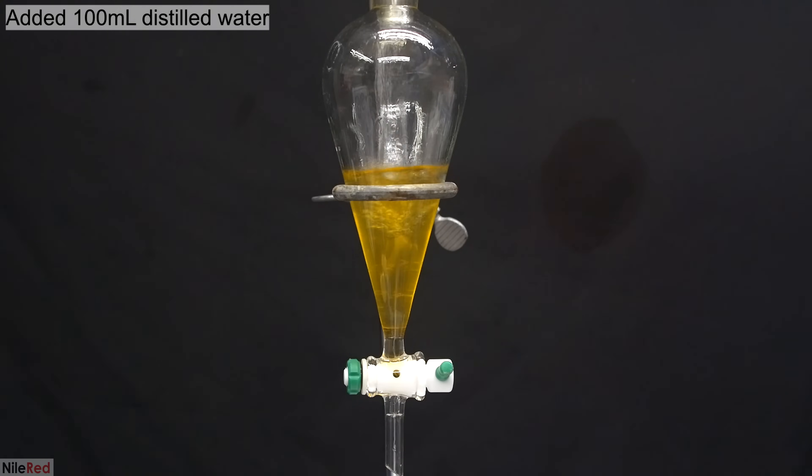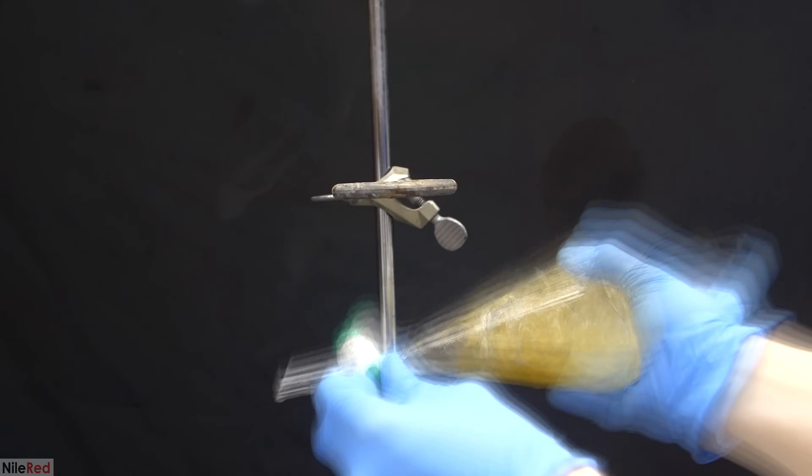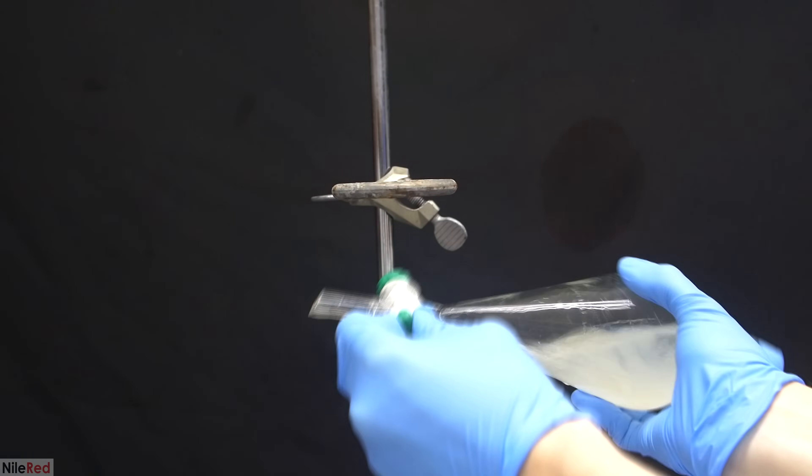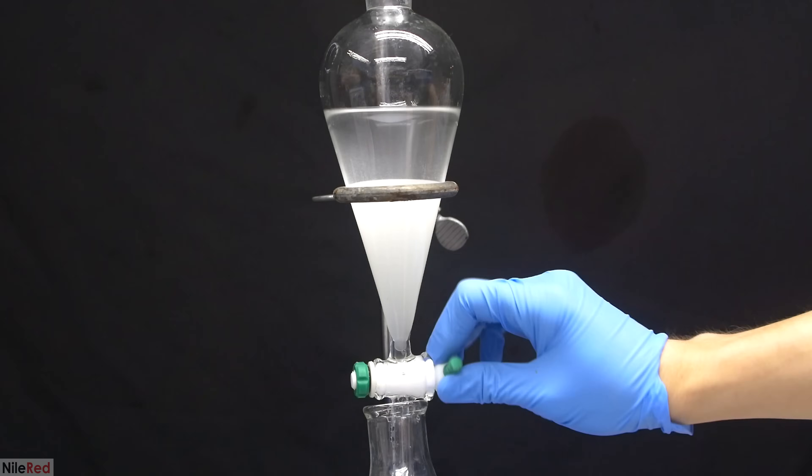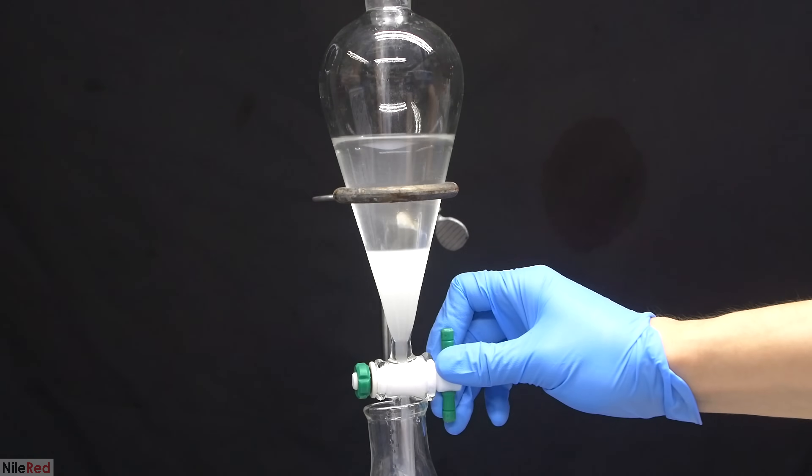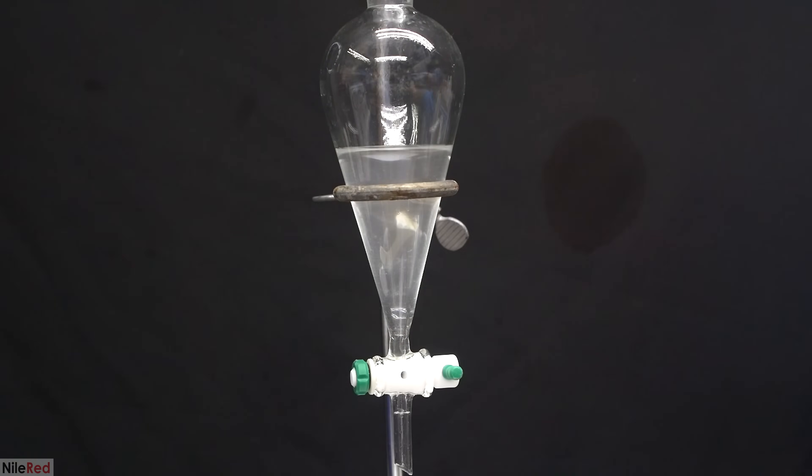Our 1-bromopentane is much cleaner, but now it's full of sulfuric acid, so we need to wash it with a little bit of water. The addition of the sulfuric acid gave us a yellow color, but when we shake things up with water, it goes back to being white. The solution is placed back on the stand, the layers are allowed to separate, and again our lower 1-bromopentane layer is drained off.